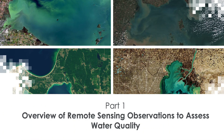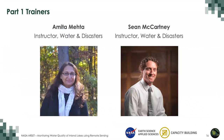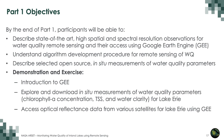That brings us to today's session, part one: overview of remote sensing observations to assess water quality. The overall objectives for today's session are: to describe state-of-the-art high spatial and spectral resolution observations for water quality remote sensing, and to access these using Google Earth Engine. We'll also understand algorithm development procedures for remote sensing of water quality, describe selected open-source in-situ measurements, and have a demonstration and exercise.